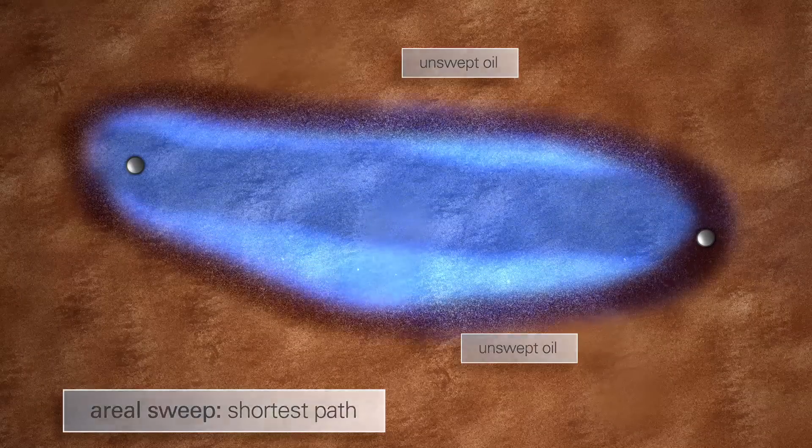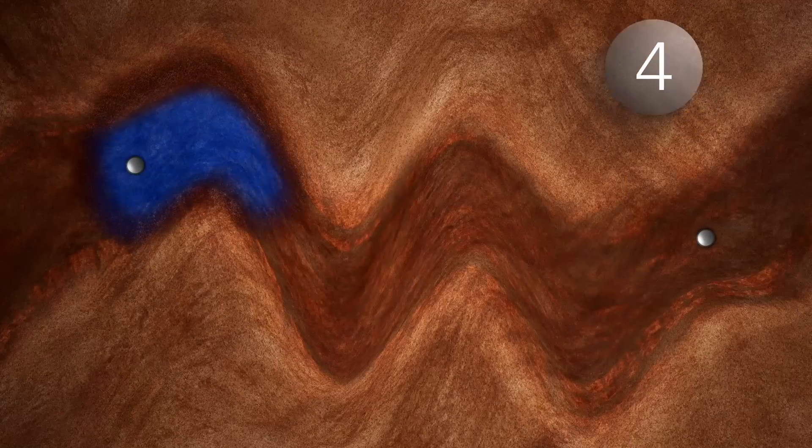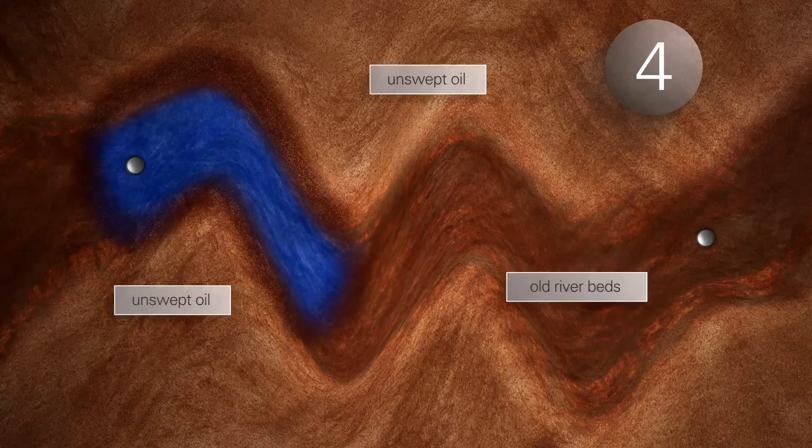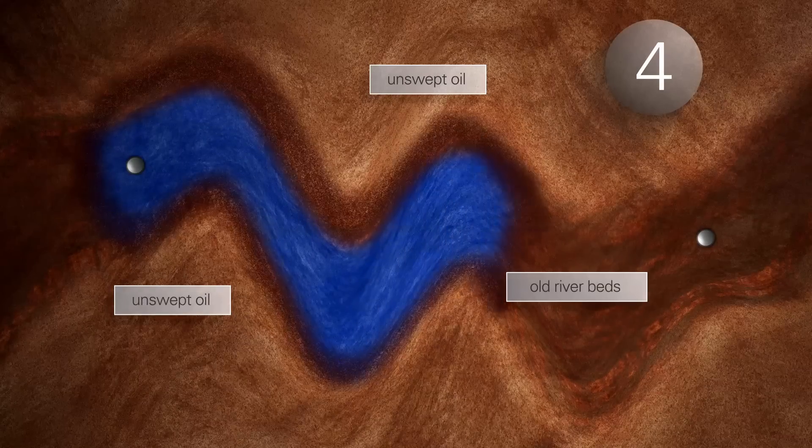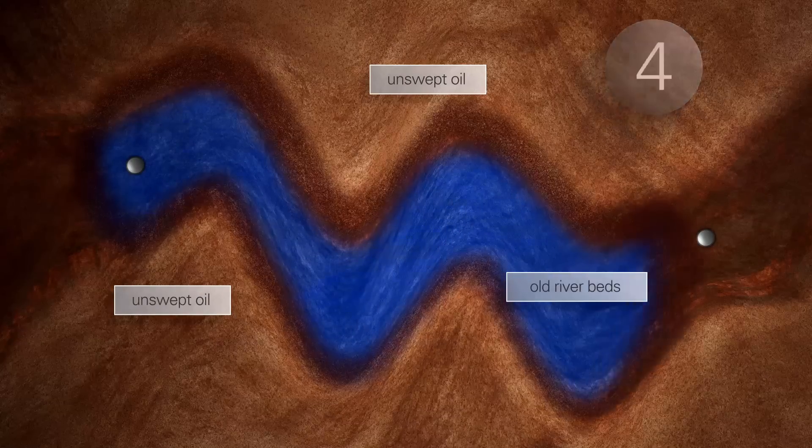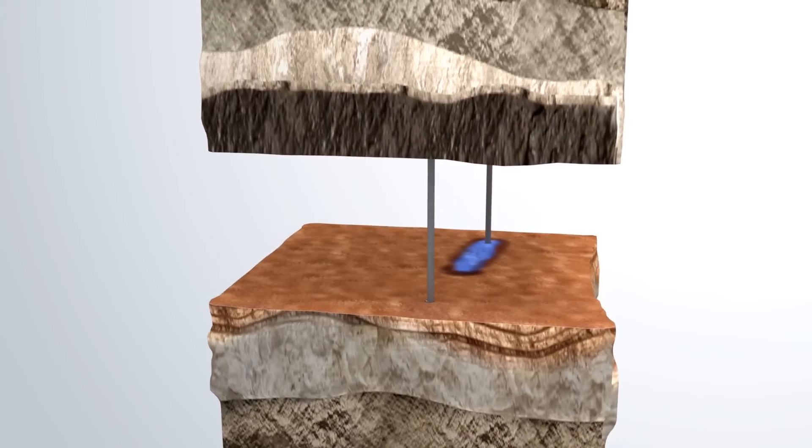This can be further complicated by higher permeability channels in the rock, such as old riverbeds, where the water will naturally follow these in preference to sweeping the rest of the reservoir. The ability of the water to reach out horizontally is called aerial sweep.